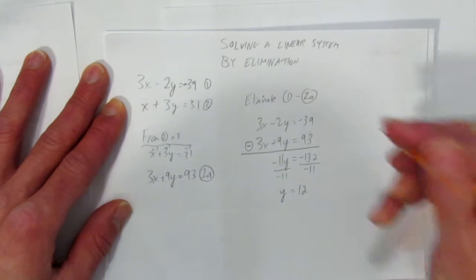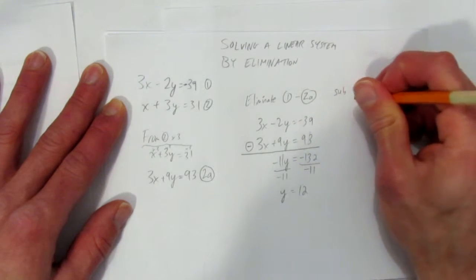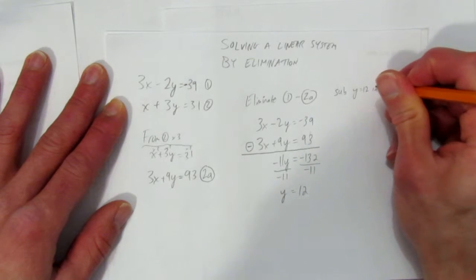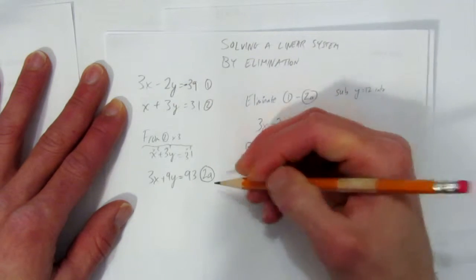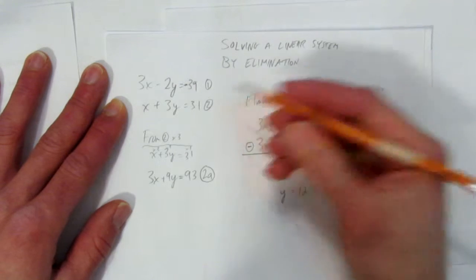Alright, we know what y is. So now, since we've got y equals 12, we're going to sub y equals 12 into one of the equations. You can pick any of the equations, it doesn't matter. I'll pick equation 2.